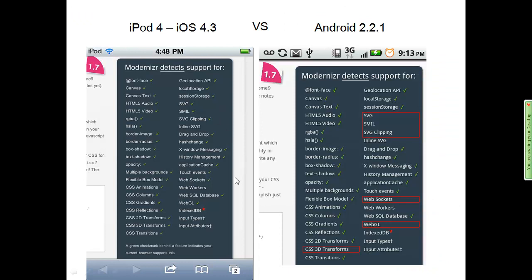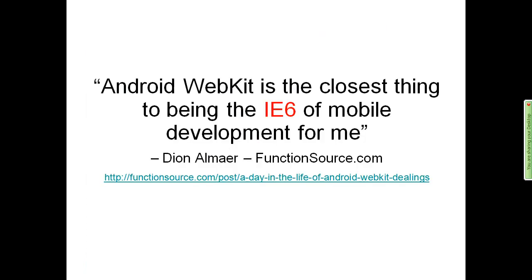Looking at Android versus iOS side by side: IndexedDB is missing for both, but WebSockets is missing for Android, as well as the SVG stuff and CSS3 transforms. WebSockets being missing is the more important one for me because that's one of the neater features. There's a great quote from Dion of Ajaxian.com: 'The Android WebKit is the closest thing to being the IE6 of mobile.' Just know that Android is weaker, and I primarily run an Android phone as my daily phone.